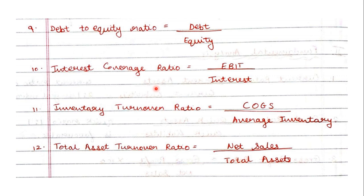Next is inventory turnover ratio — the formula is COGS (cost of goods sold) upon average inventory. The 12th one is total asset turnover ratio, which is net sales upon total assets. Note that interest coverage is not that important; debt to equity is very important. Total asset turnover is also not that important, but inventory turnover is an important ratio. So the 10th and 11th ratios are very important.